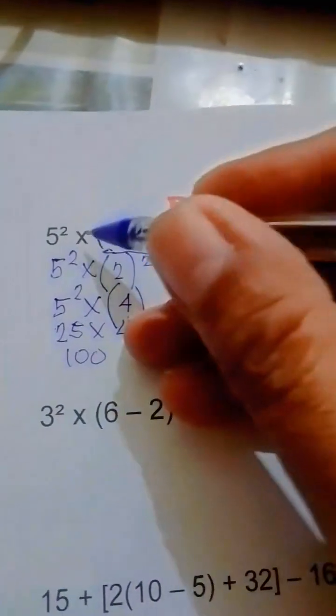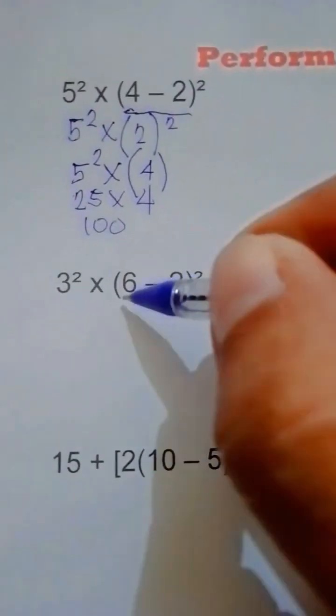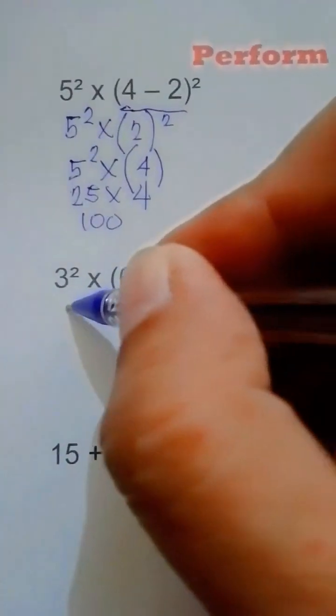25 times 4 equals 100. So the answer of this expression is 100. Let's do the second one. Copy 3 to the second power times.